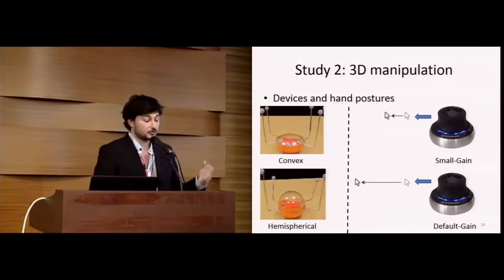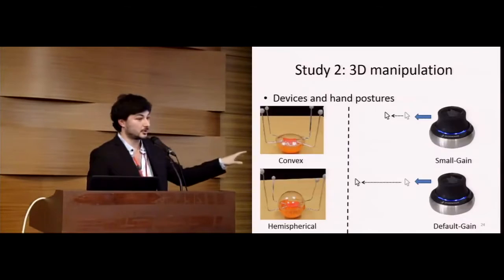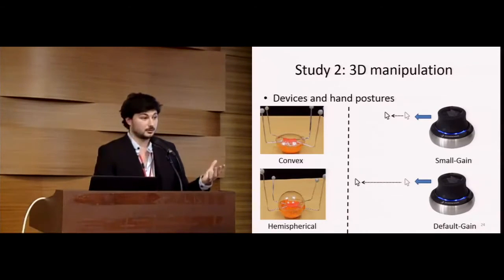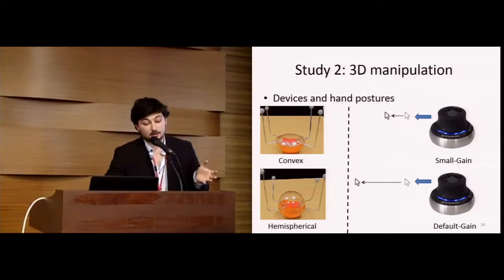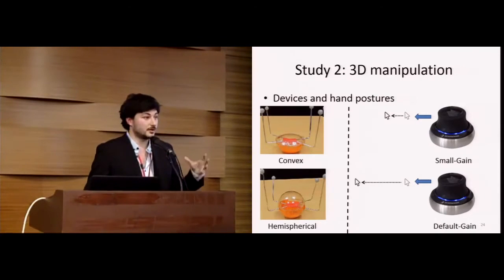In this experiment, we compared the two versions of the Roly-Poly mouse to two versions of the SpaceMouse. One version with the default gain, and one version with a smaller gain, because users found that the default gain was too fast. Concerning hand postures, we didn't constrain them on this experiment because we didn't want to constrain the hand postures on the SpaceMouse.